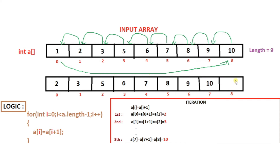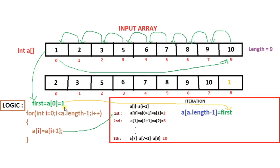After completion of this for loop, our output will look like this, but index eight will be empty. Since at this last position we want the element that was originally at the first position, before the for loop we have to store the first element in some variable. After the for loop, we will assign this stored first element at position length minus one, which is nine minus one equals eight. This is how we can rotate an array left by position one.